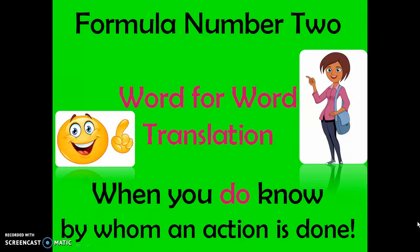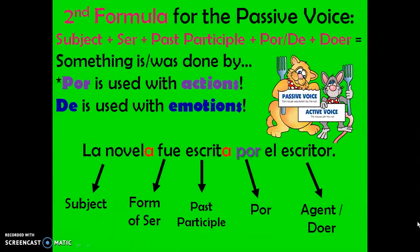Formula number two, which we're working on now, is when we do our word-for-word translation — when we know by whom an action is done. Again, our second formula: subject plus ser plus past participle plus por or de plus agent or doer. Our final example: La novela fue escrita por el escritor — the novel was written by the writer. We know by whom, so we use formula number two: subject — la novela; form of ser — fue; past participle escrita, which agrees with the subject novela; we chose por because it's an action; and our agent or doer is el escritor.